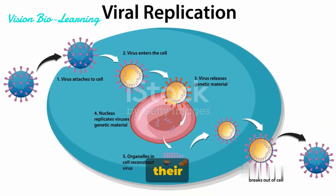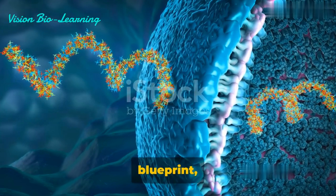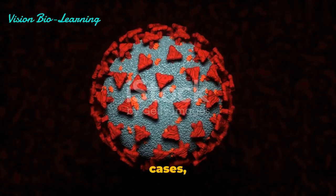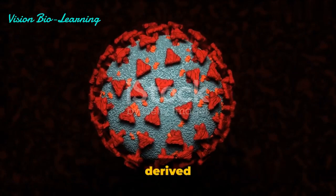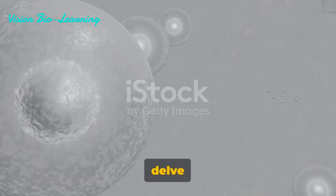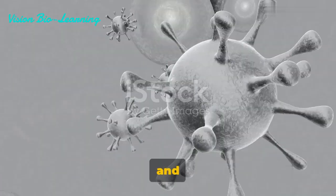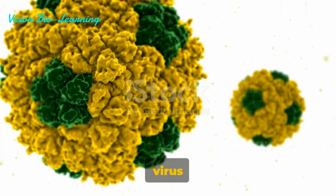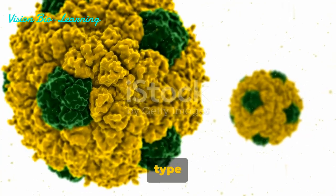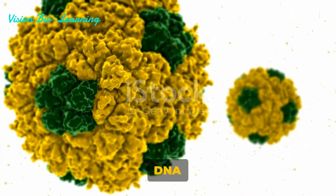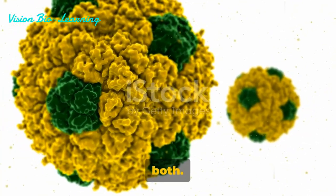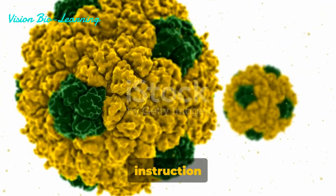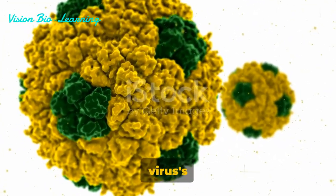The nucleic acid, which carries their genetic blueprint; a protective protein coat known as the capsid; and in some cases, an outer envelope derived from the host cell. Let's delve deeper into each of these components and unravel the mystery of viral structure. At the heart of every virus lies its genome, a single type of nucleic acid, either DNA or RNA, but never both. This genome is the master blueprint, the instruction manual, for the virus's life cycle.